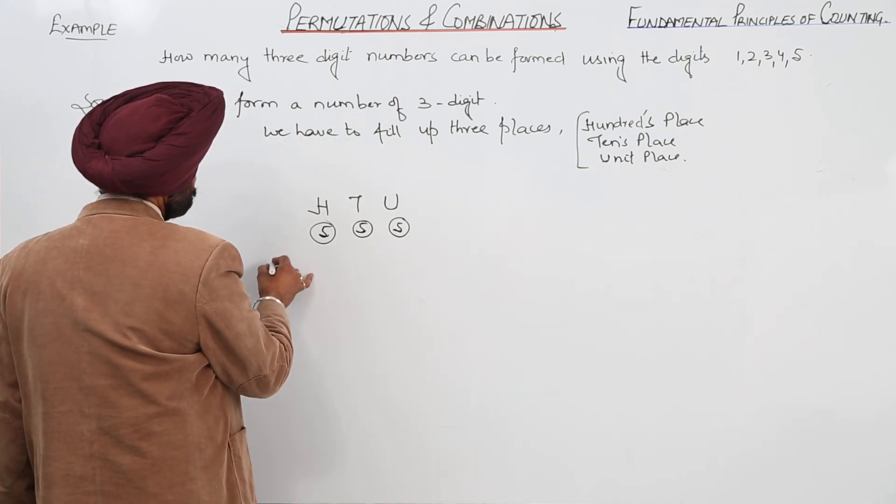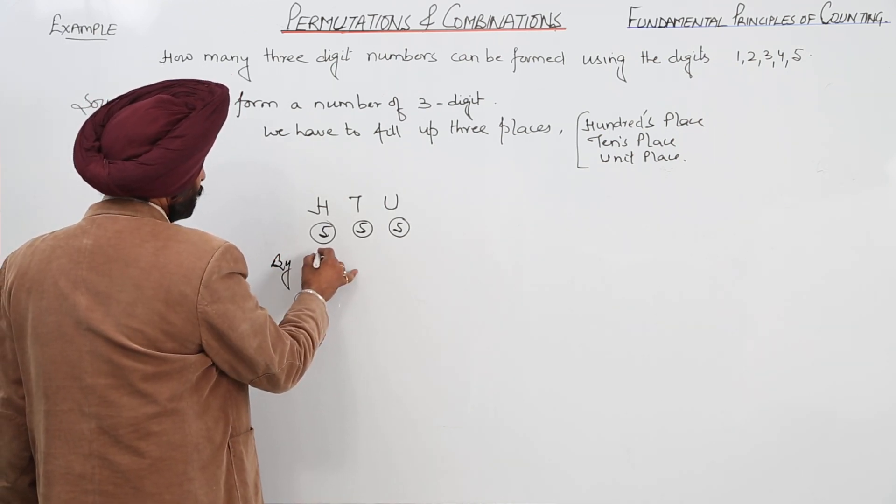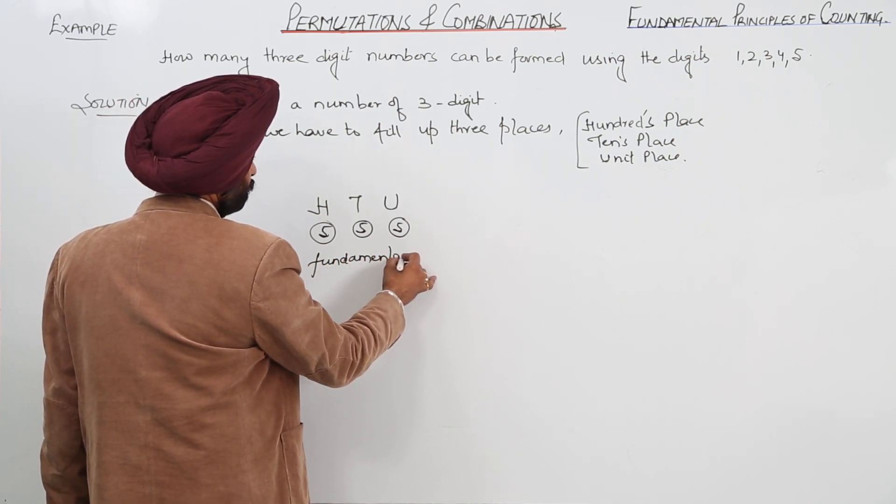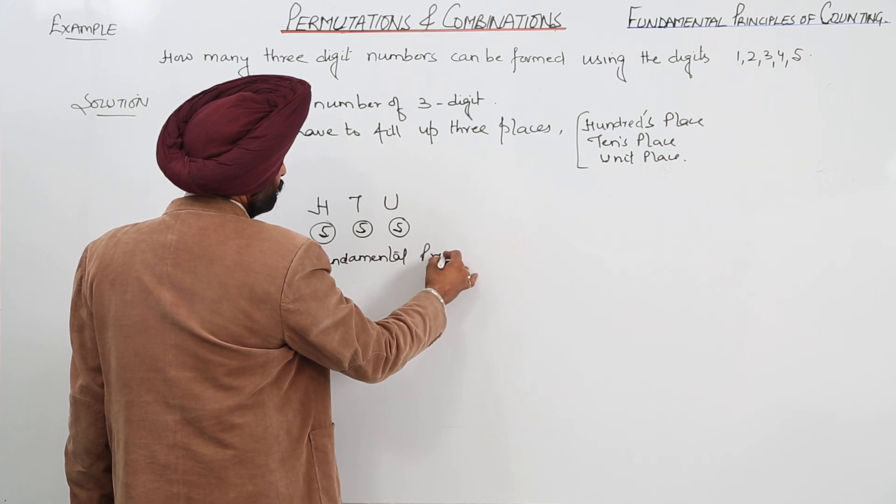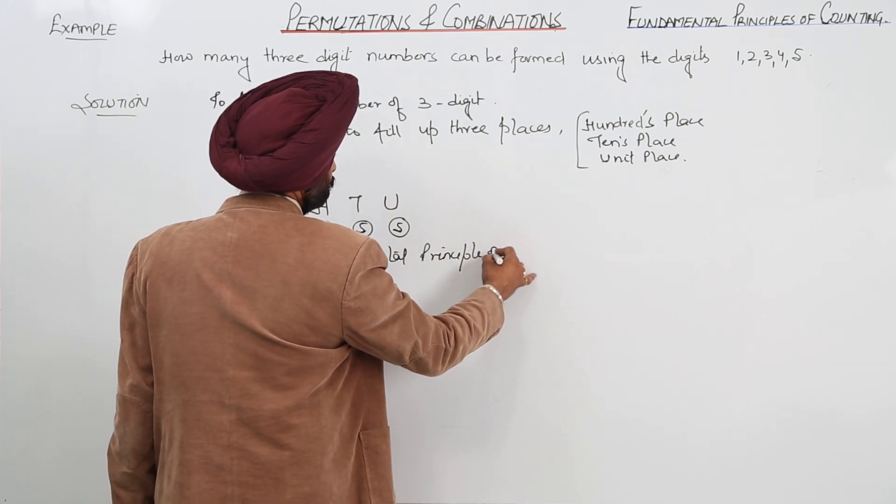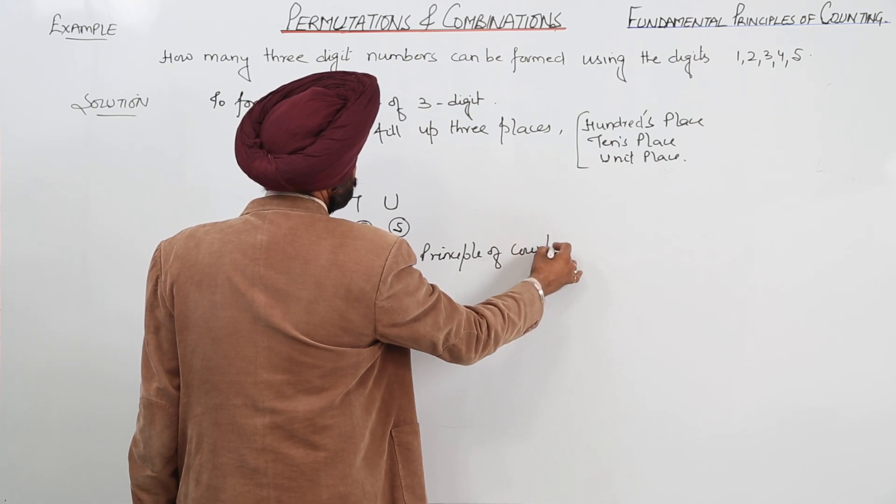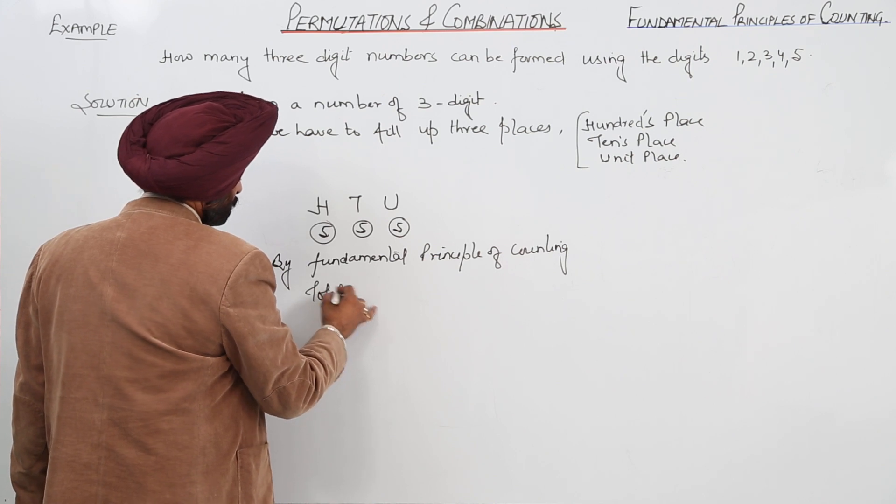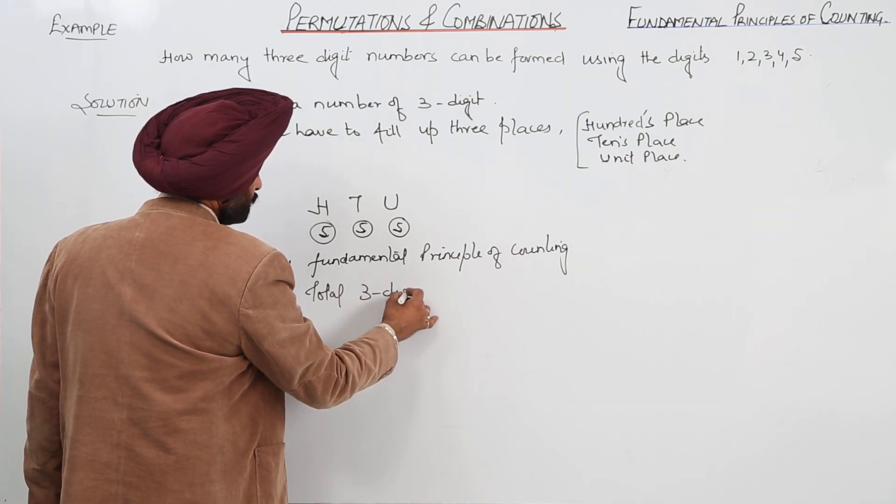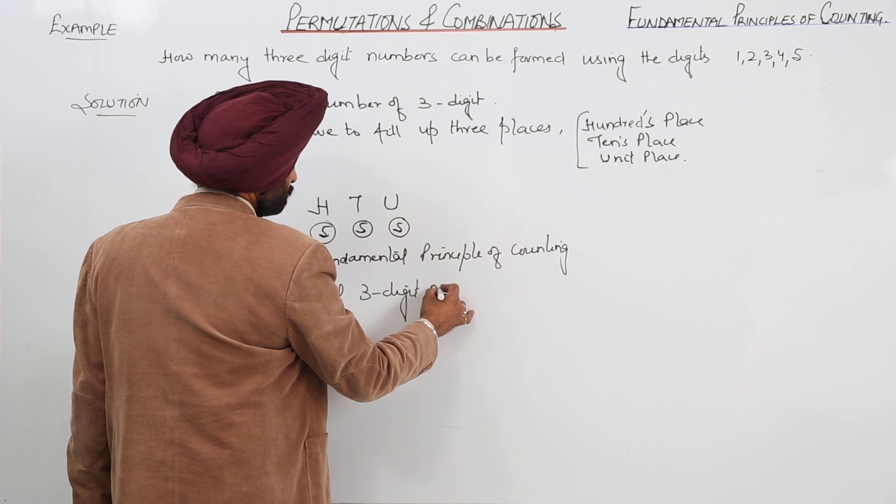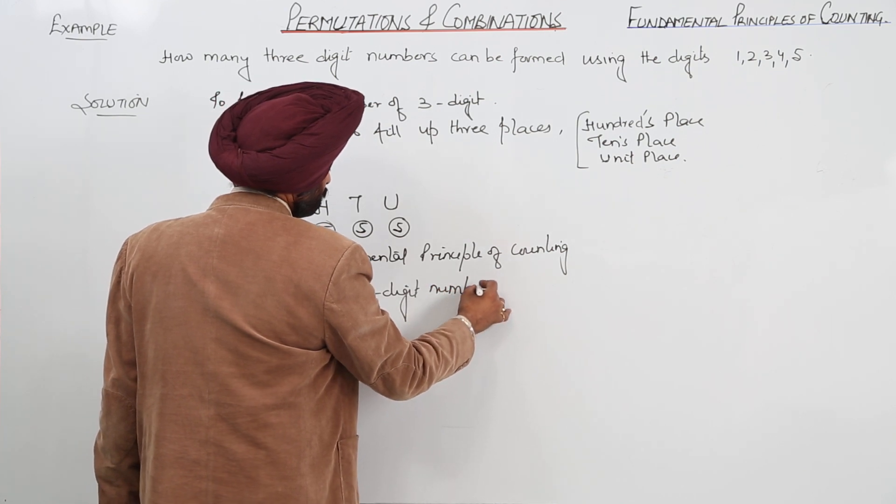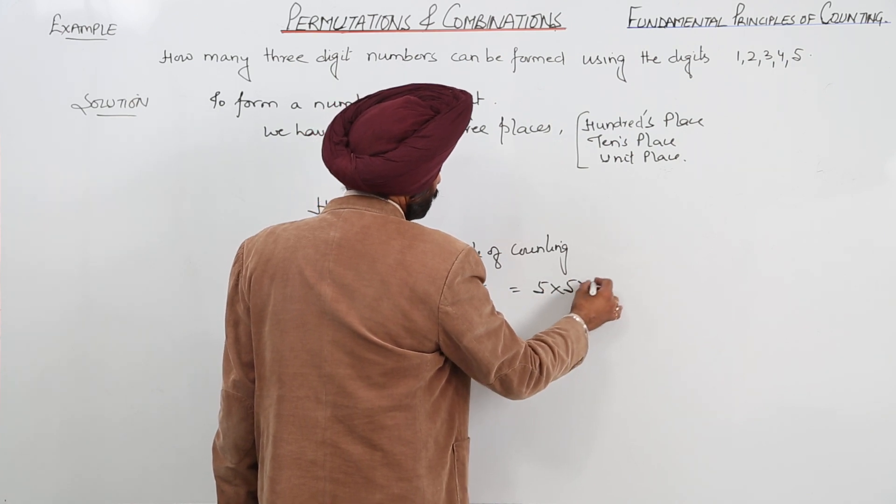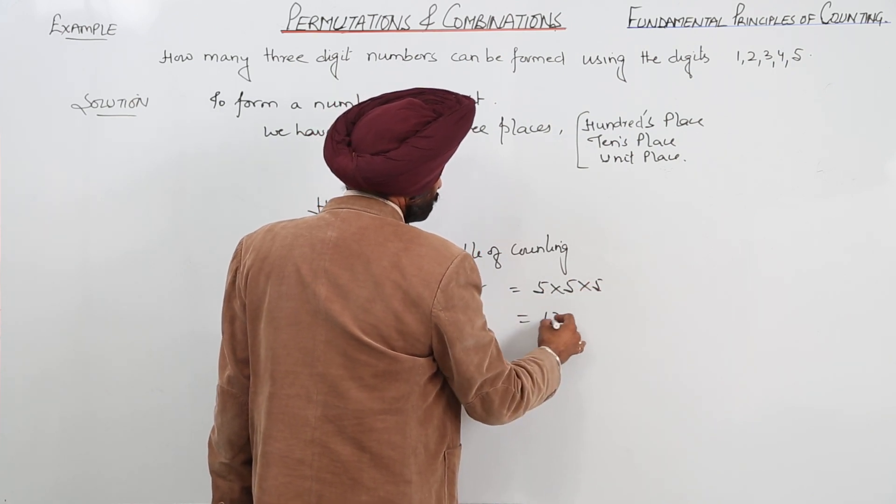Okay? Now, by fundamental principle of counting, total numbers, total 3-digit numbers are 5 times 5 times 5. So, this is equal to 125.